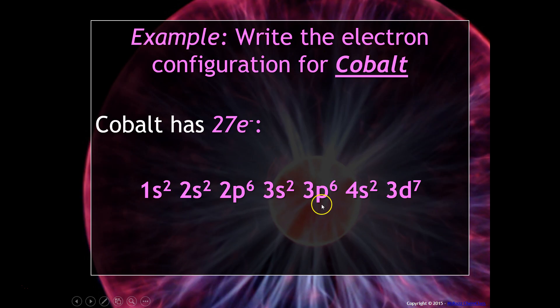So notice we go 1s, 2s, 2p, 3s, 3p, 4s, and then we go back to the 3d. And notice it would be 3d⁷, even though d has the ability to hold 10 electrons.